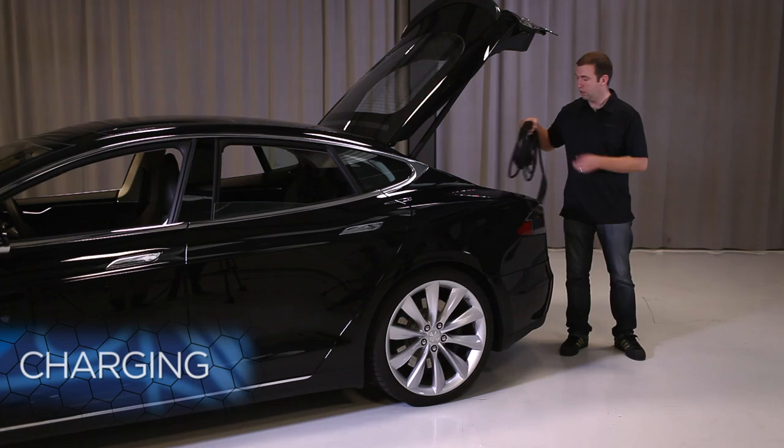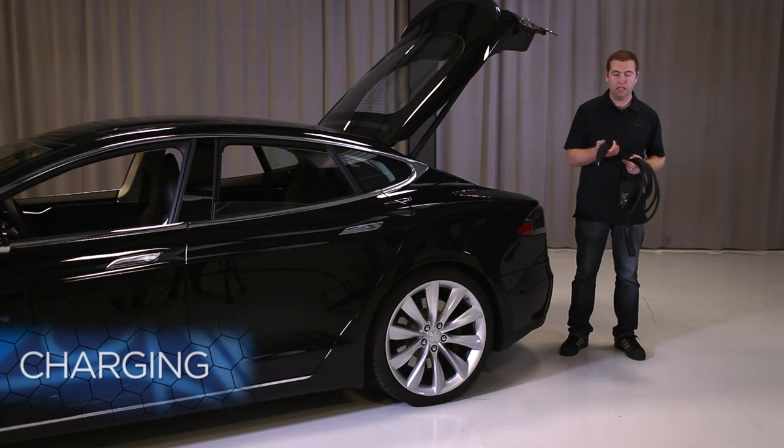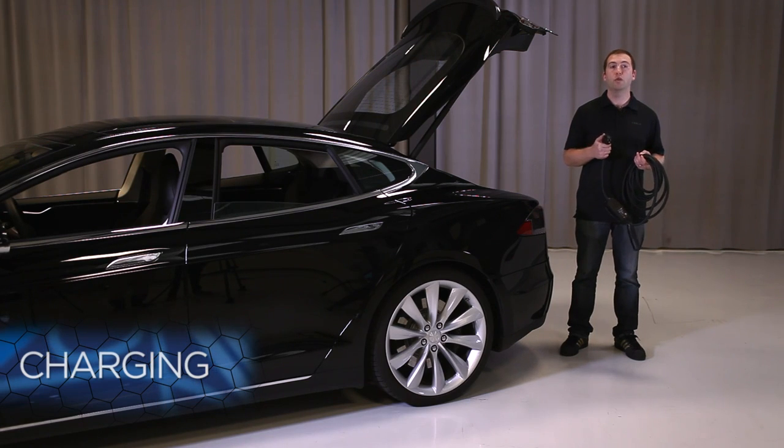All cars come with a mobile connector and an adapter for public charging stations. The mobile connector is nice and lightweight and allows you to plug into 120 or 240 volt power. This is a regular 120 volt plug—not the fastest thing in the world but very convenient because you'll find these all over the place.